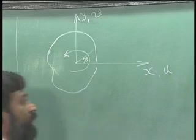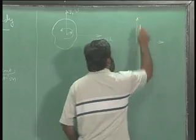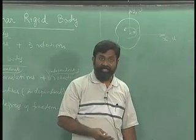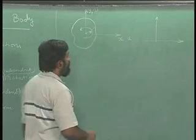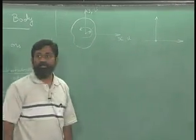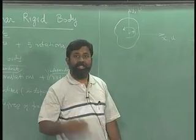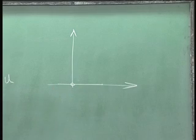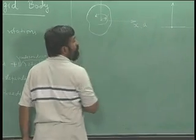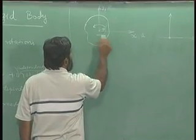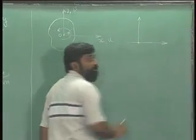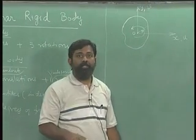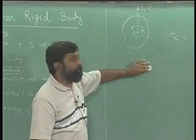We also need a reference frame: what is zero displacement in the x direction, zero displacement in the y direction, and what is zero rotation. We can define an origin which specifies zero displacement in x and y directions, and the horizontal axis can be taken as a reference axis. If I draw these axes on the body and attach them — calling this point O — and define displacement in the horizontal and vertical directions and its rotation, it is possible to describe the motion of this planar rigid body completely.